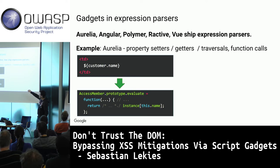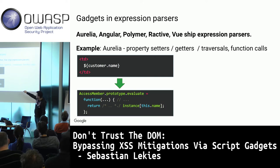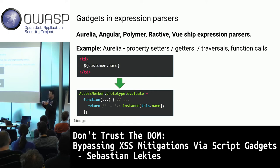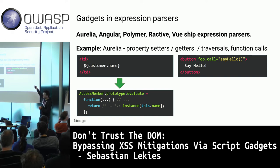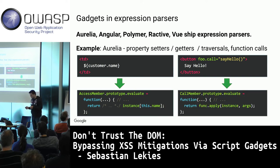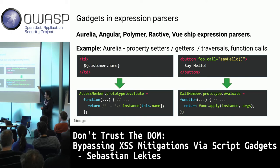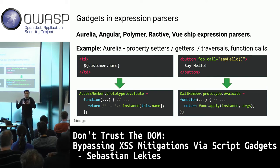Inside Aurelia, when parsing an expression it sees an access to a variable or function, looks it up in the scope object, and returns the property. With these expression languages we can also call functions — it's not JavaScript, it gets interpreted by the framework, which looks up the function reference in scope and applies arguments to call it without using eval.